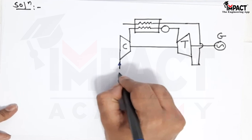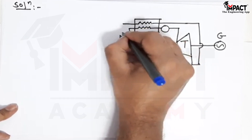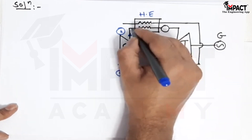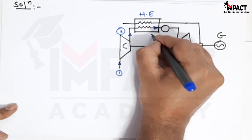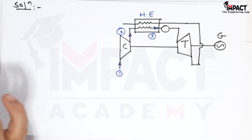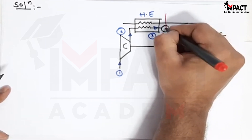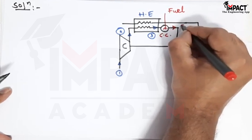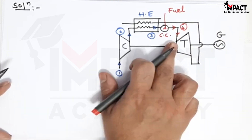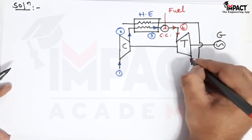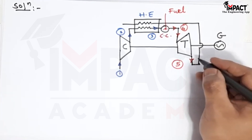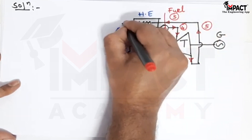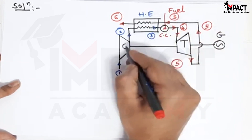Atmospheric air enters at state 1 and gets compressed in the compressor to reach state 2. It then enters the heat exchanger where the air gets heated to reach state 3. From there it enters the combustion chamber where fuel combustion occurs and we reach state 4. The hot gases enter the turbine, expand to state 5, and the exhaust is brought back into the heat exchanger, leaving at state 6 after giving heat to the compressed air.